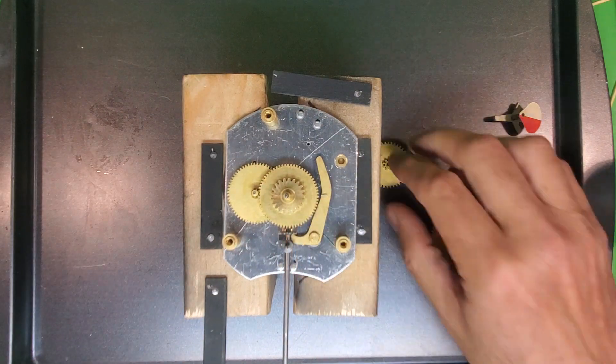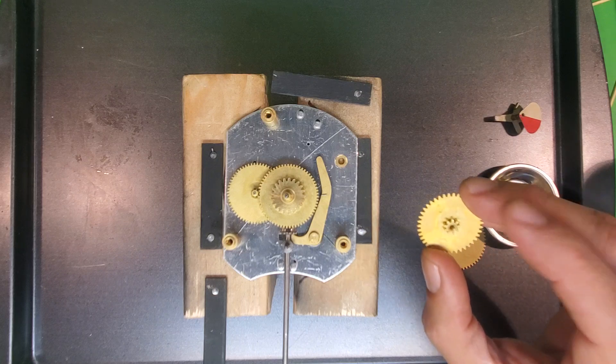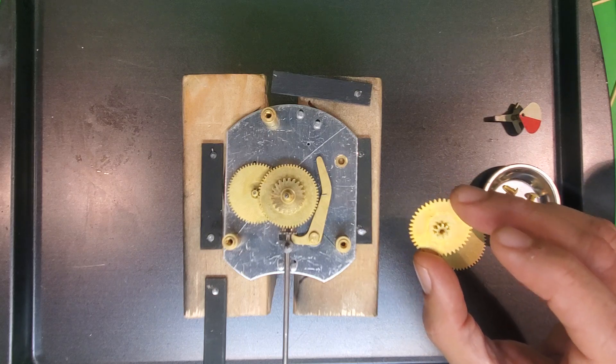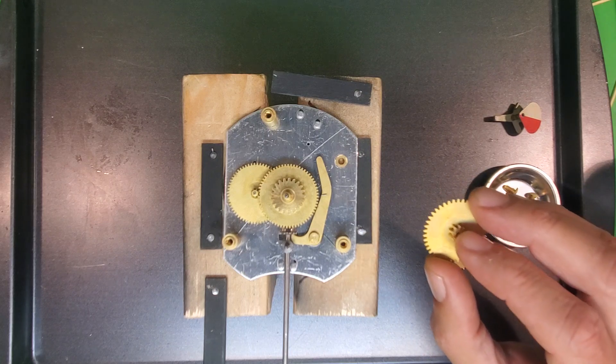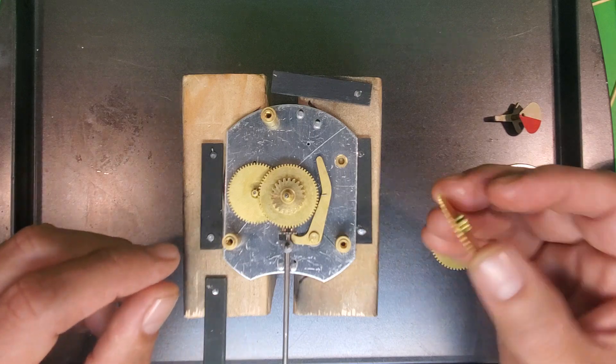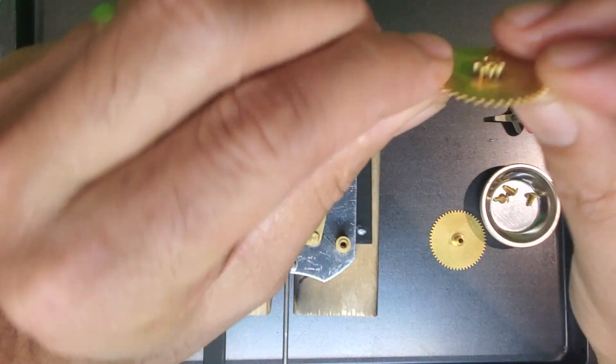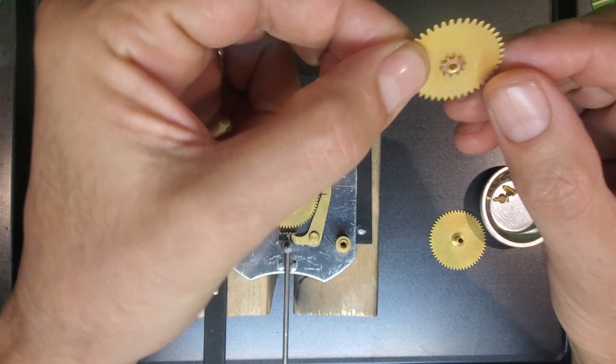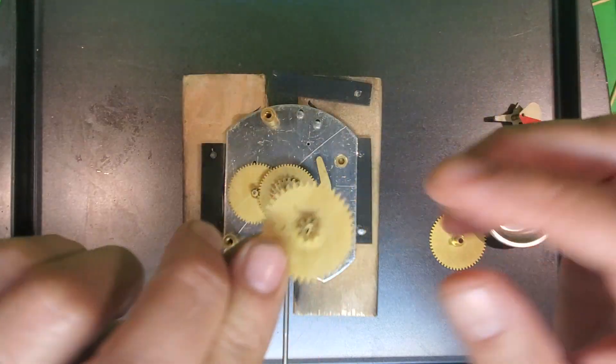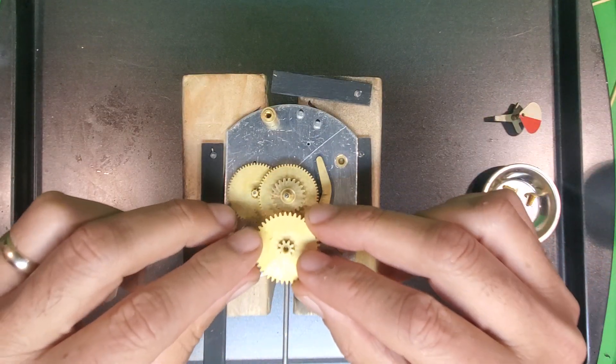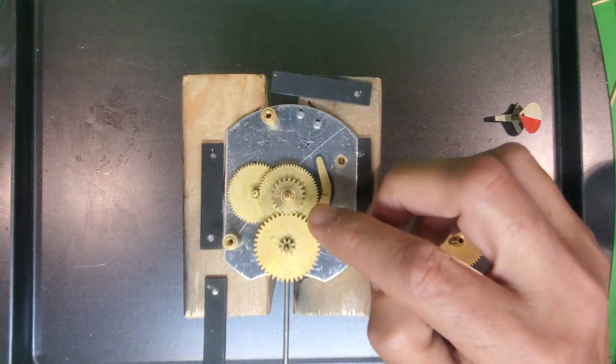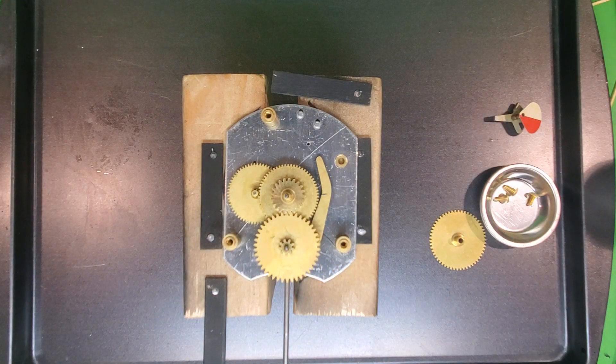The next step is to put on the set gear assembly, identified as number 7. So there's two sides to it. And you'll notice this side is larger. We want that facing up. So those gears are going to mesh right there.